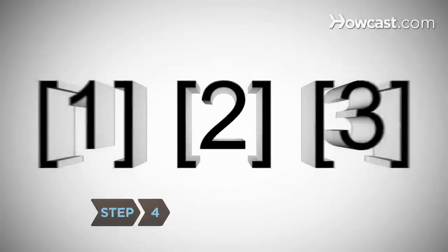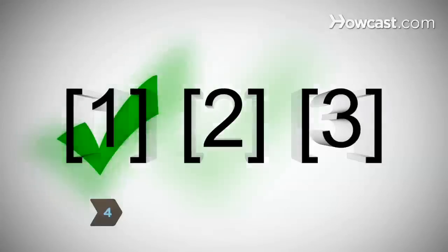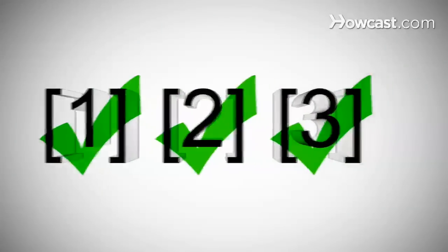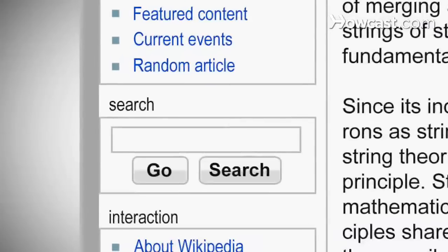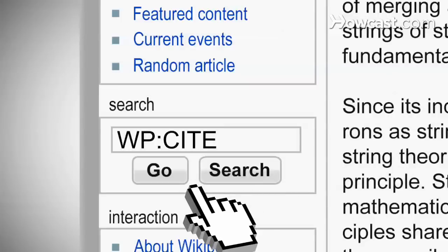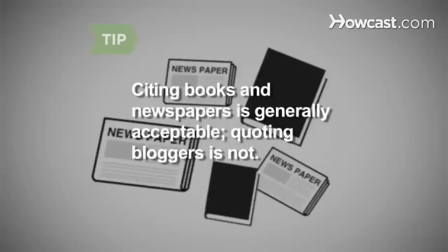Step 4. If you're adding new information, be sure to provide reliable sources that verify your work, or it will likely be deleted. Detailed instructions on the proper way to cite sources can be found by typing WP colon CITE into the search box and hitting Go. Material in books and newspapers generally is considered reliable. The musings of bloggers are not. And don't bother writing about yourself. It's considered a conflict of interest.